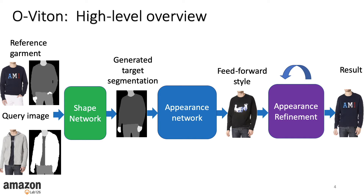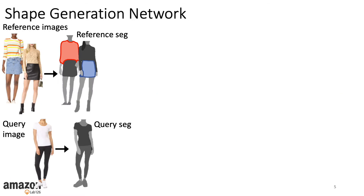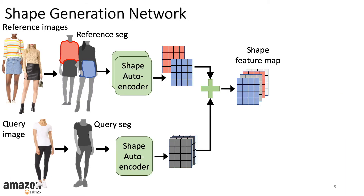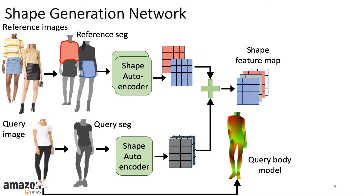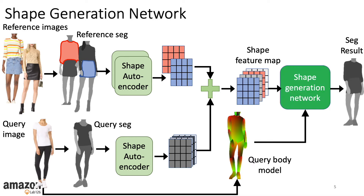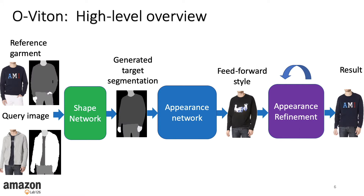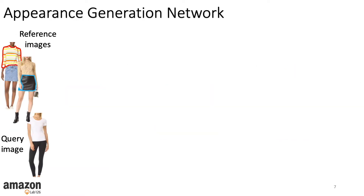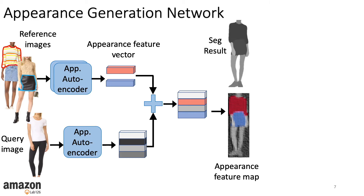Therefore, we fine-tune the appearance network. The shape generator inputs are the tensor encoding of the garment's shape and a body model of the query image. The appearance network takes as inputs the encoding of the garment's appearance and the new segmentation map result from the shape generator.